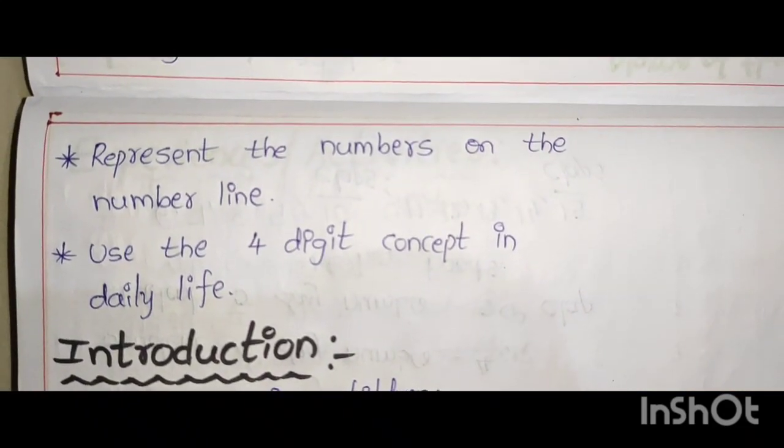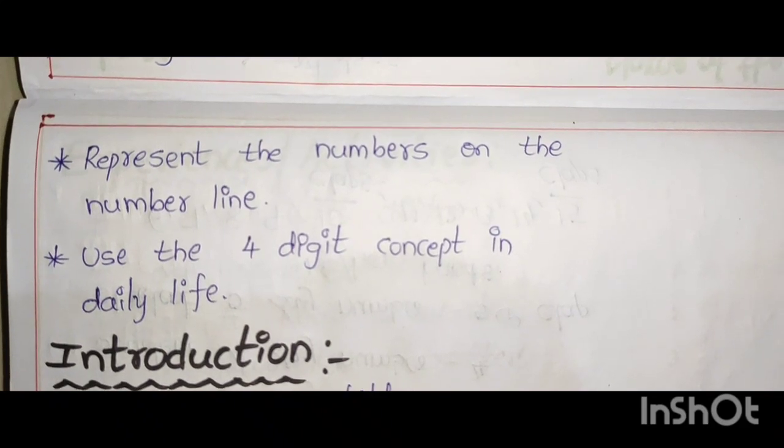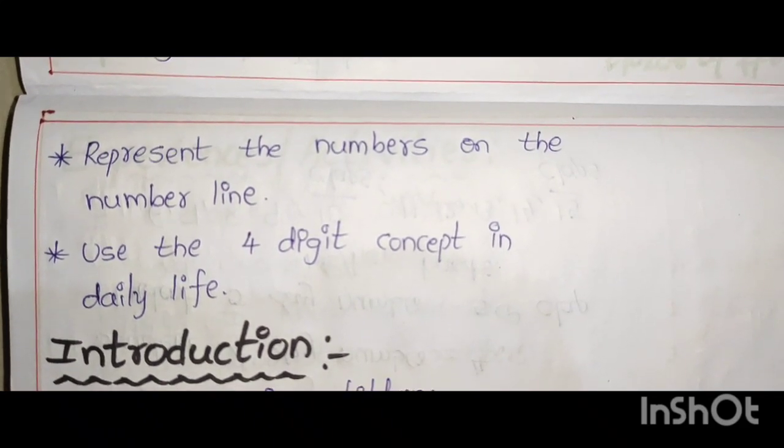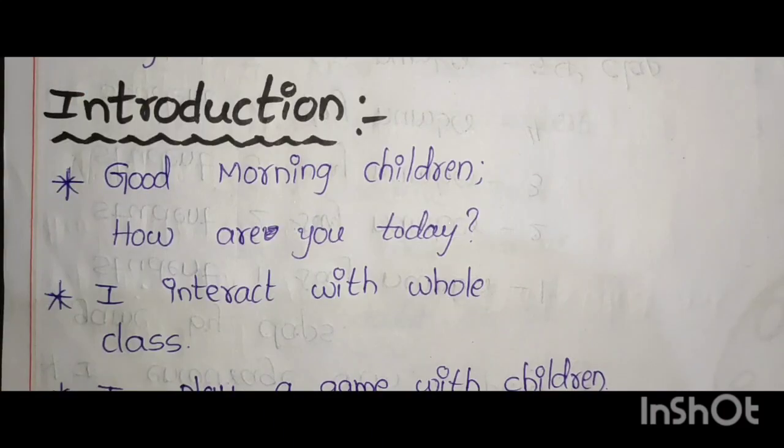And next one, represent the numbers on the number line. Use the 4 digit concept in daily life. These are the learning outcomes for the numbers. Next topic is introduction.